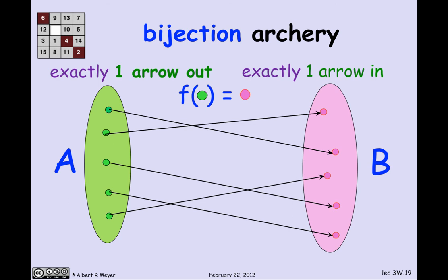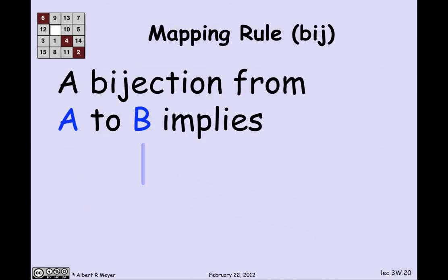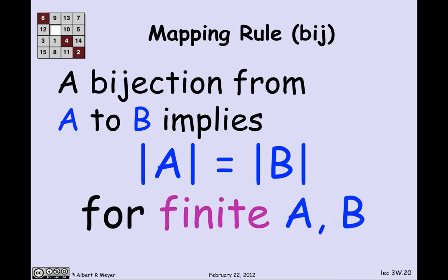Now there's an obvious thing about bijections, which we'll wrap up with, which is why they're useful in counting theory. It's clear that since there's exactly one arrow out of every element in A, the number of arrows is the same as the size of A. And since there's exactly one arrow coming into every element of B, the number of arrows is the same as the size of B. And guess what? That means that where there's a bijection, the sets are of equal size. If there's a bijection between two finite sets A and B, that means they're the same size.